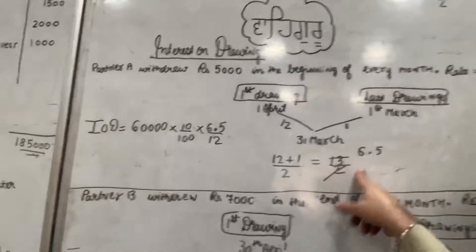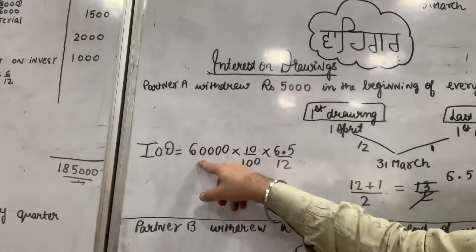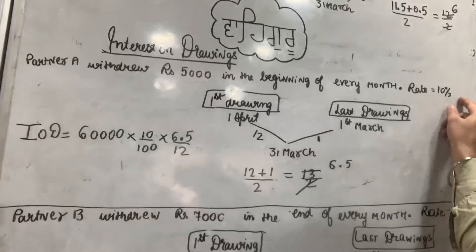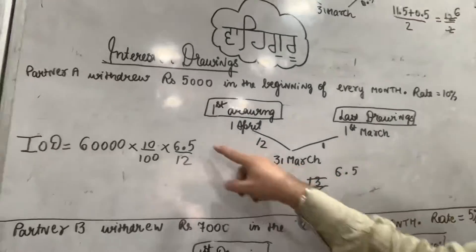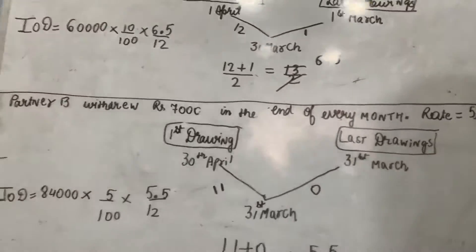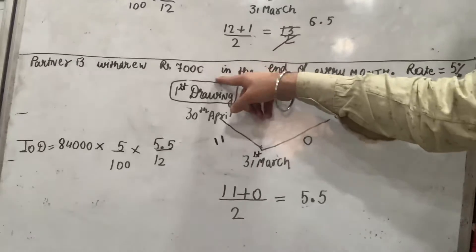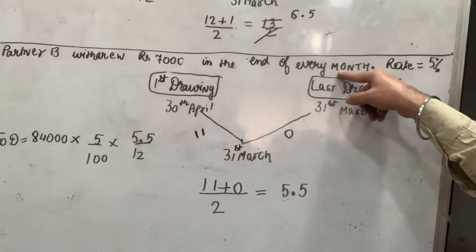IOD kaise niklegi? 5,000 har month mein nikala hai. 5,000 into 12, 60,000. Rate of interest 10% into 6.5 upon 12. Isko solve karke IOD aajayegi.